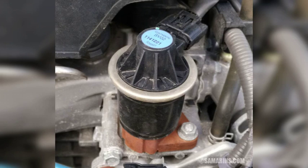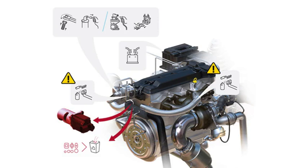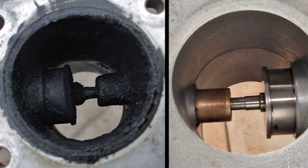In rare cases, the P0402 code can be caused by a problem with the ECU — usually a software glitch or faulty sensor input. Symptoms vary depending on severity and include an illuminated check engine light, rough idle or stalling when the EGR valve is stuck open, hesitation or lack of power when accelerating especially at low speeds, increased emissions with more smoke, and decreased fuel economy due to inefficient combustion from excessive exhaust gas recirculation.